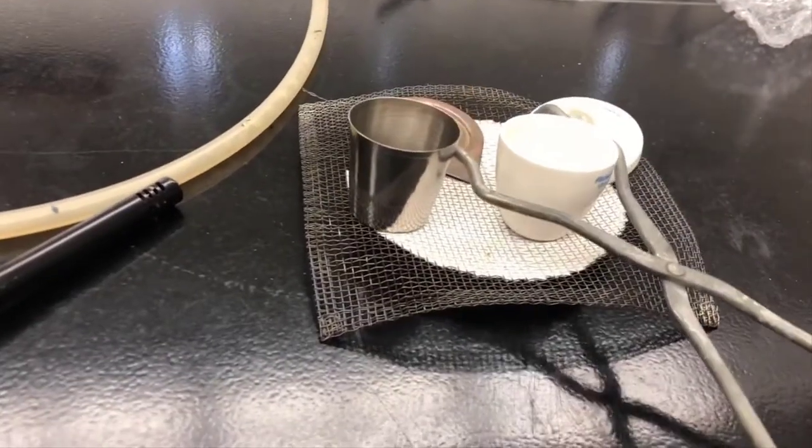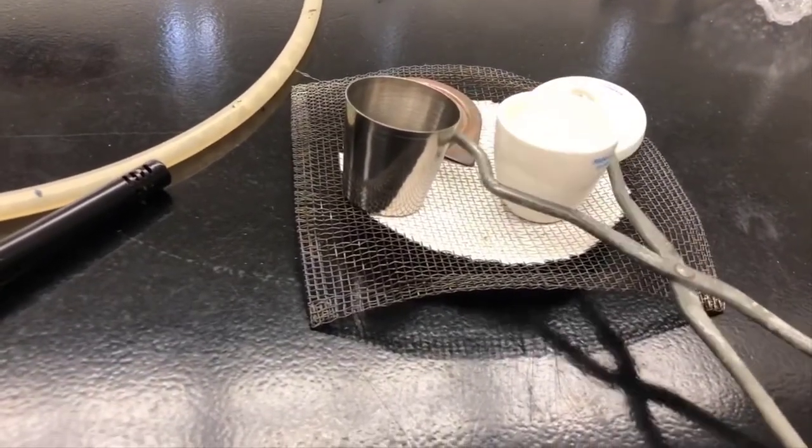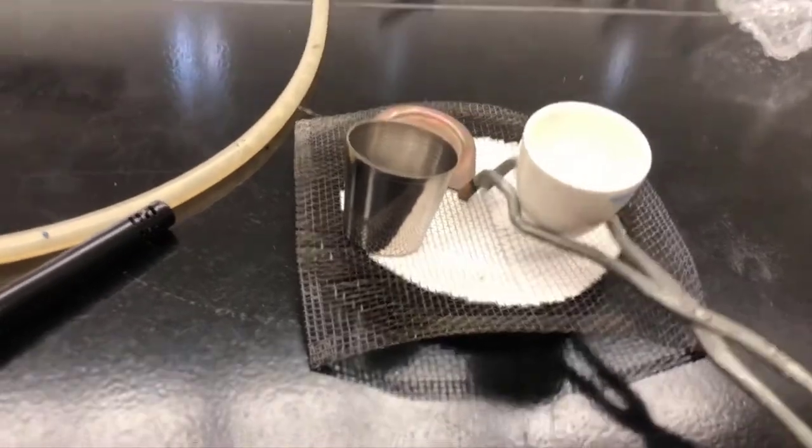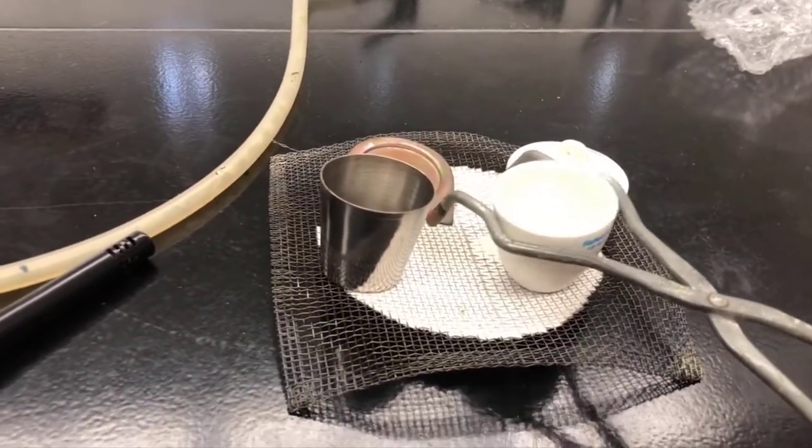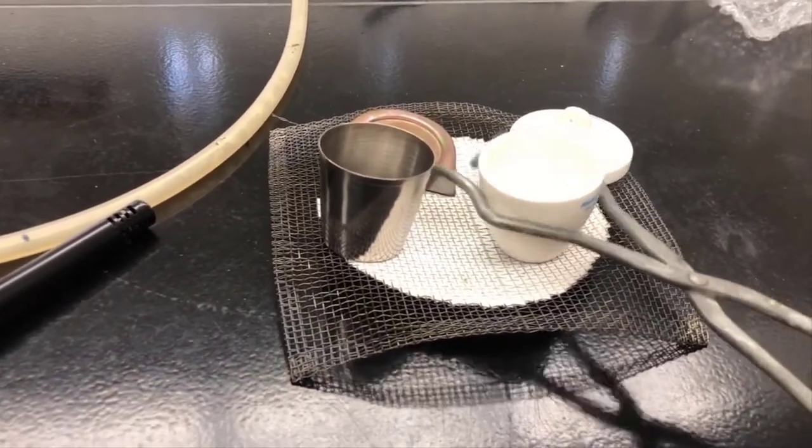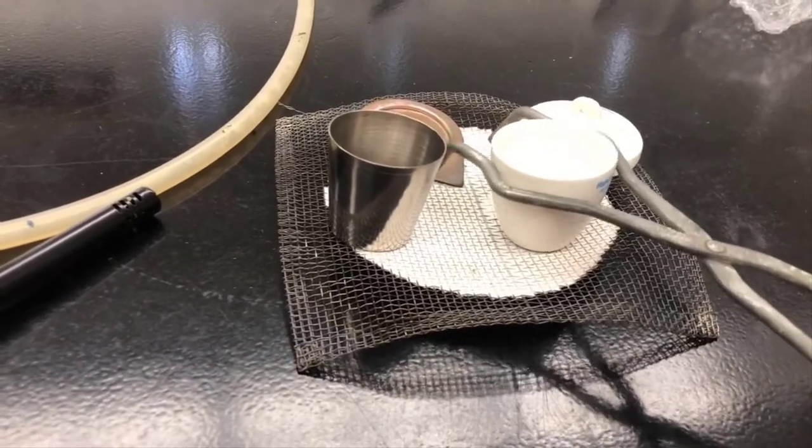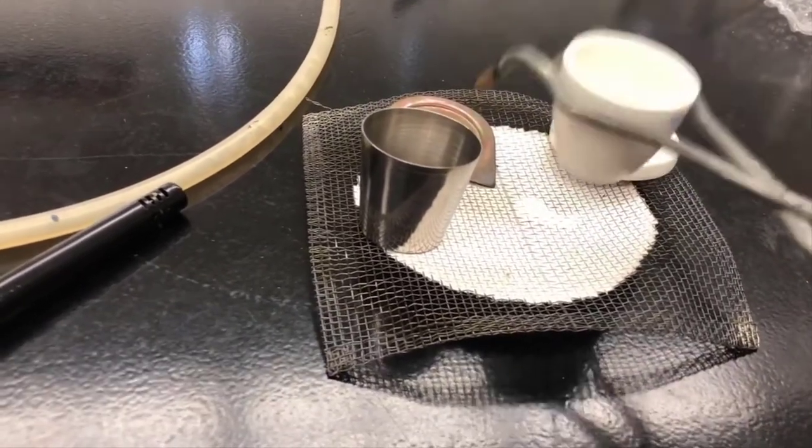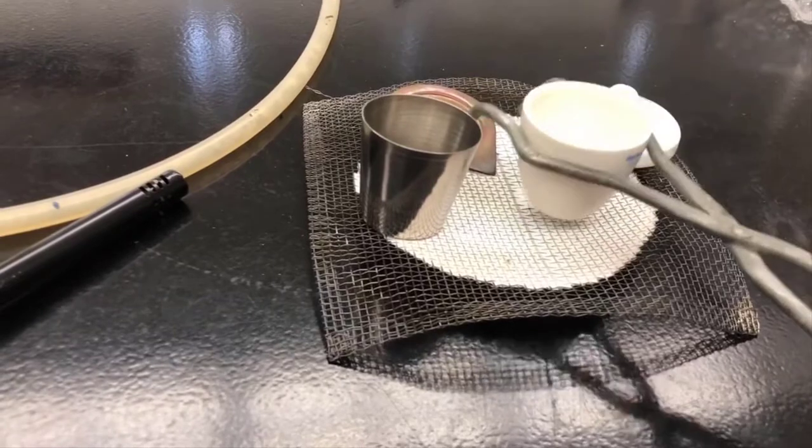But typically people grab the crucibles at the top this way. Don't try to grab it too far at the bottom because it's very slippery as you squeeze it, because the angle is too severe. But at the top, you should be able to grab it and have pretty good stability without it falling off.